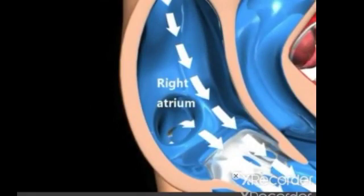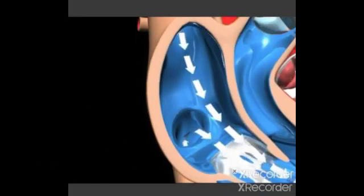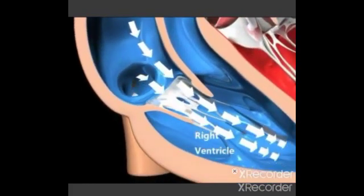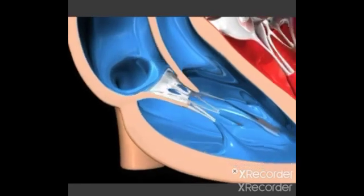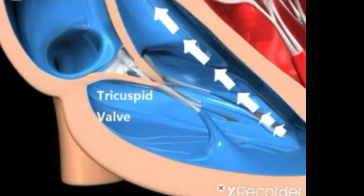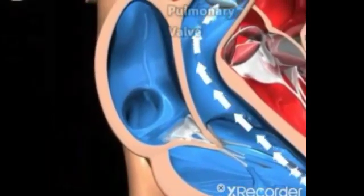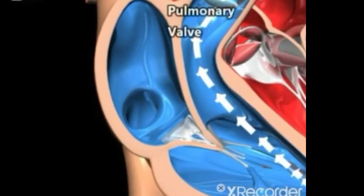The blood flows from the right atrium to the right ventricle through the opening of the tricuspid valve. When the right ventricle is full, the tricuspid valve shuts.